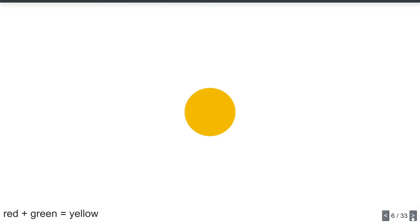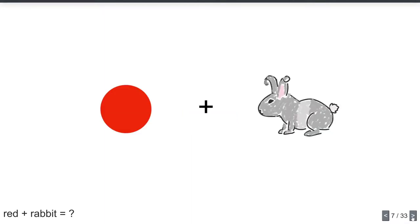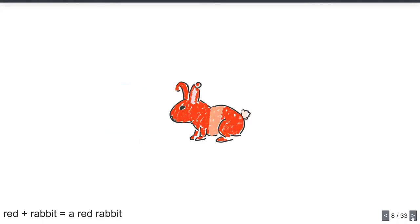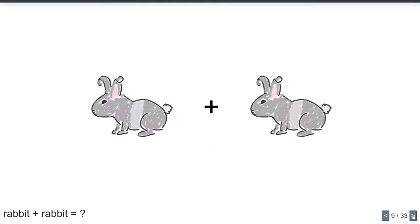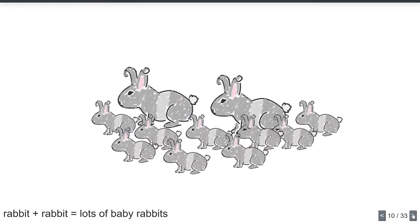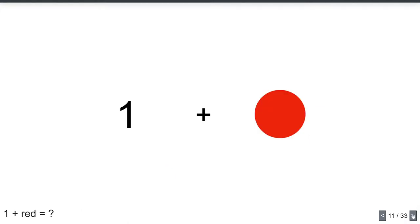What about red plus a rabbit? Maybe that's a red rabbit. What about rabbit plus rabbit? Maybe that's lots of baby rabbits. But what if I said one plus red — what would I do with that? Do I want the next color along from red? Do I want to ascribe a number to red and add that to one? What does one plus red mean?